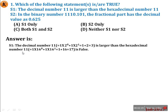Now convert hexadecimal 11 to decimal. Hexadecimal base is 16. So: 1 × 16^0 + 1 × 16^1 = 1×1 + 1×16 = 1 + 16 = 17. So the statement becomes: decimal number 3 is larger than hexadecimal number 17. Obviously this is false because 3 is not larger than 17.